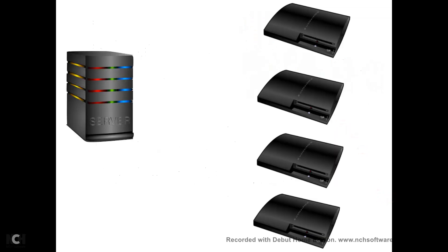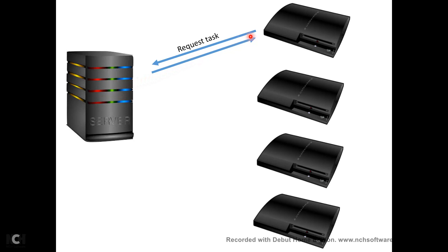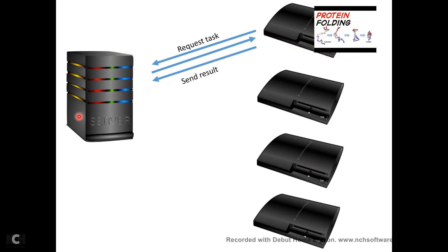So you have a central server somewhere which produced the proteins — the tasks. You'd have your PlayStation 3s all around the world. A PlayStation would first request a task, the server would send the task back, your PlayStation would do the computation of how to fold the protein, and then send the result back to the server. So we have one kind of thread that produces protein folding tasks, and other threads — one per PlayStation 3 — that consume a task and perform it.